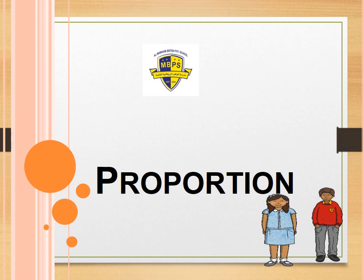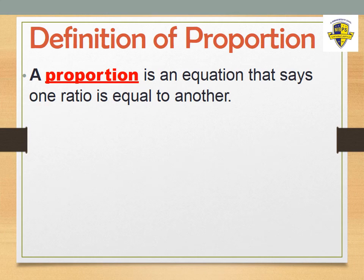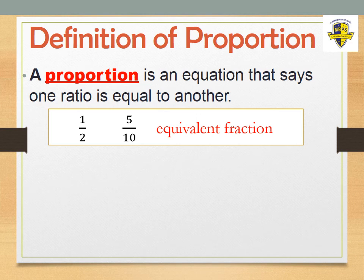After we remember the meaning of ratio and how to write ratios, we will start our lesson on proportion. A proportion is an equation that says one ratio is equal to another. To understand this, remember equivalent fractions — two or more fractions that have the same value. For example, 1/2 and 5/10 are equivalent fractions because one is half of two and five is half of ten.